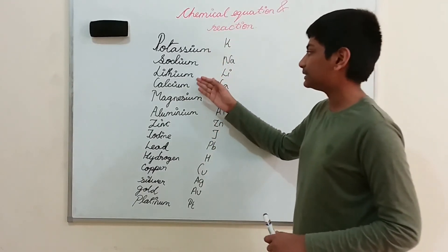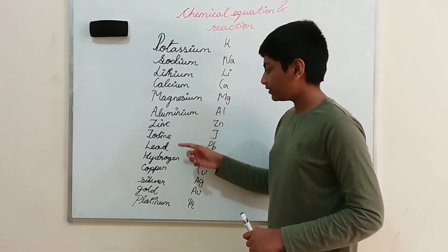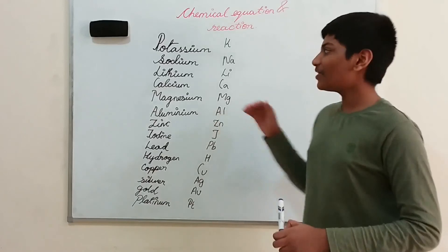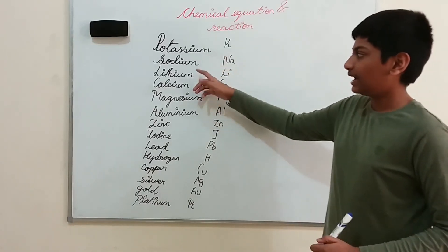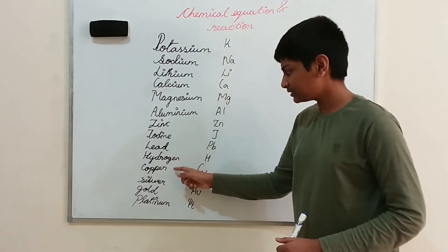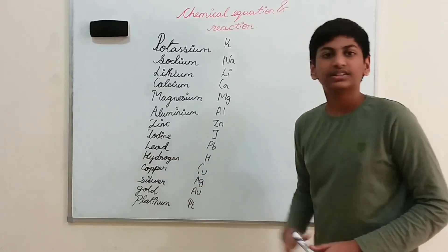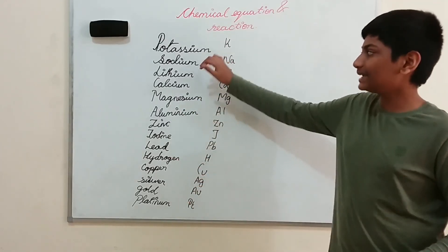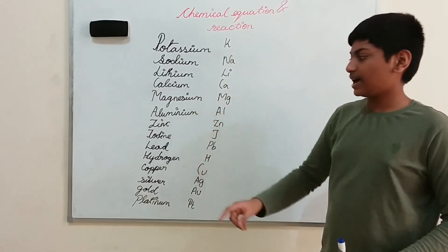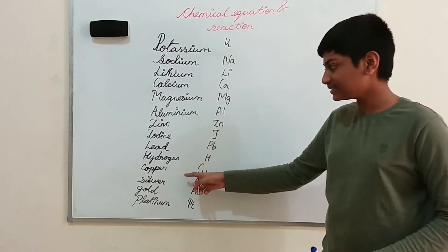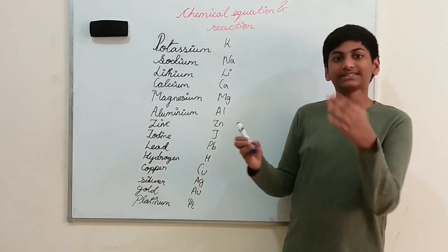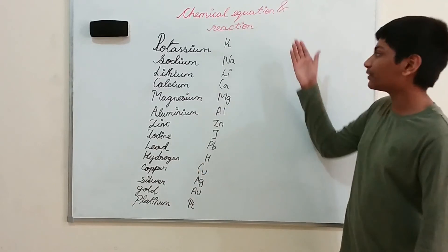The reactivity series order is: potassium, sodium, lithium, calcium, magnesium, aluminium, zinc, iodine, lead, hydrogen, copper, silver, gold, and platinum. The mnemonic to remember this is: 'Please Send Lion Cats Monkeys And Zebras Into Lovely Hot Countries, Signed by General Penguin.' If you repeat it and learn it as a sentence, you have learned the reactivity series from top to bottom.